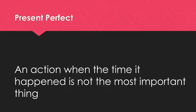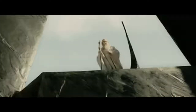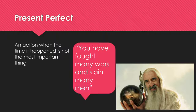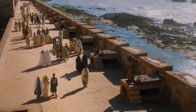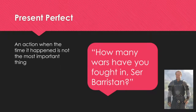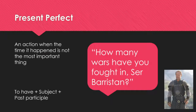We also use the present perfect to talk about actions when the time is not important: 'You have fought many wars and slain many men, Theoden King.' The subject 'you' plus 'have' plus past participle. Here's a similar example as a question: 'How many wars have you fought in, Subaristan?' The present perfect here shows that it's the wars that are important, not when they occurred. The question form begins with 'to have' plus subject 'you' plus past participle.